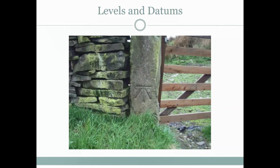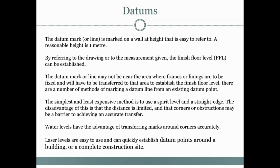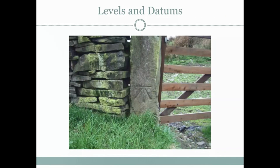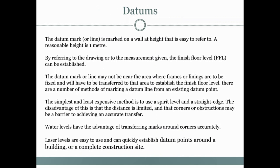Now we can look at levels and datums. Be mindful of the mark present in this picture. A datum mark or line is marked on a wall at a height that is easy to refer to — a reasonable height of about a meter. This mark on the wall is called a datum line. The datum mark may not be near the area where frames or linings are to be fixed, and will have to be transferred to that area to establish the finished floor level. Common methods of marking a datum line include using a spirit level or a straight edge, though the limitation of these methods is that the distance is limited.